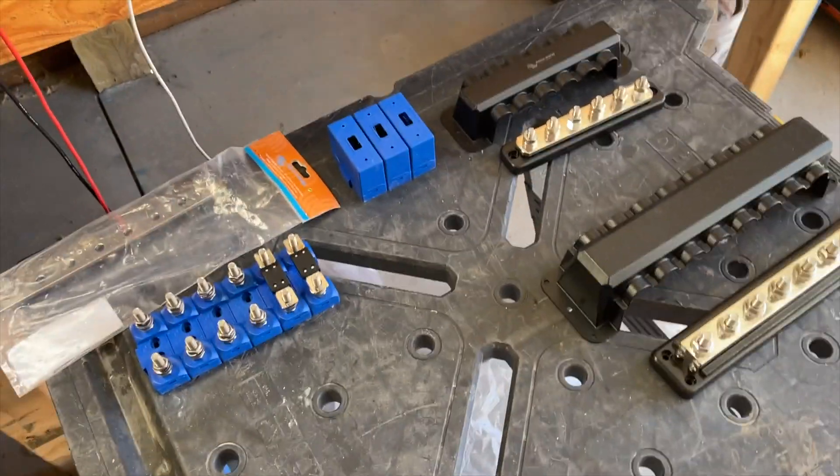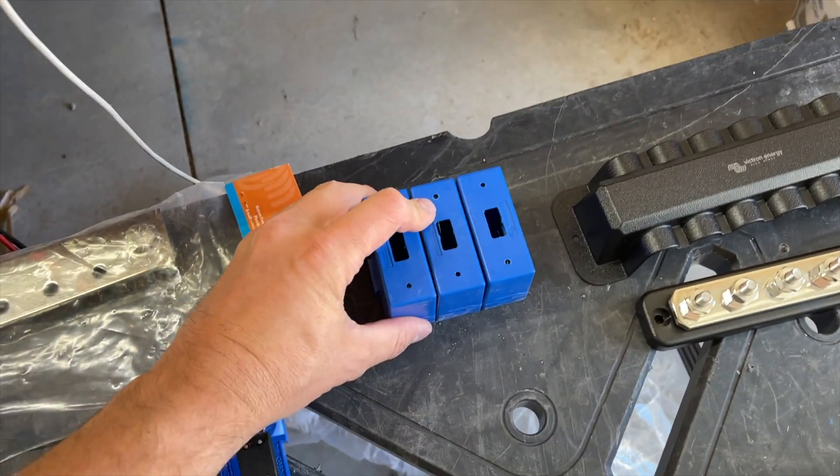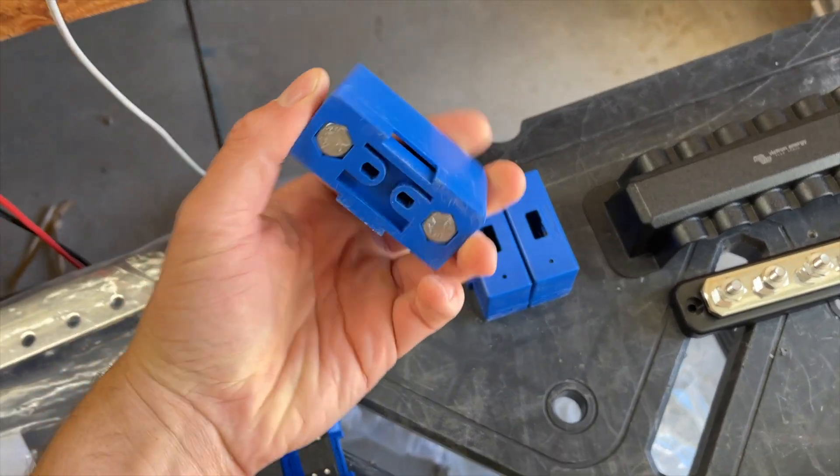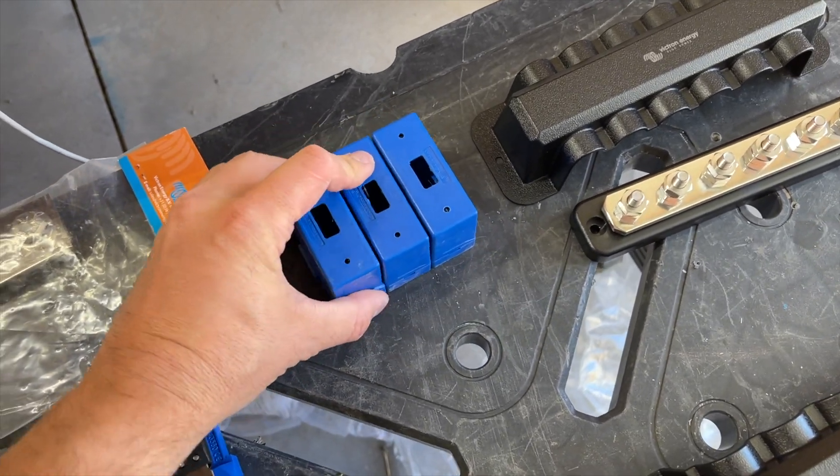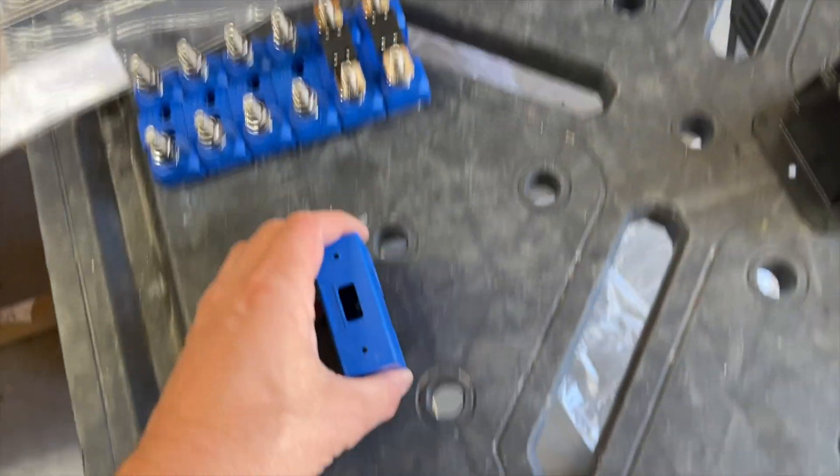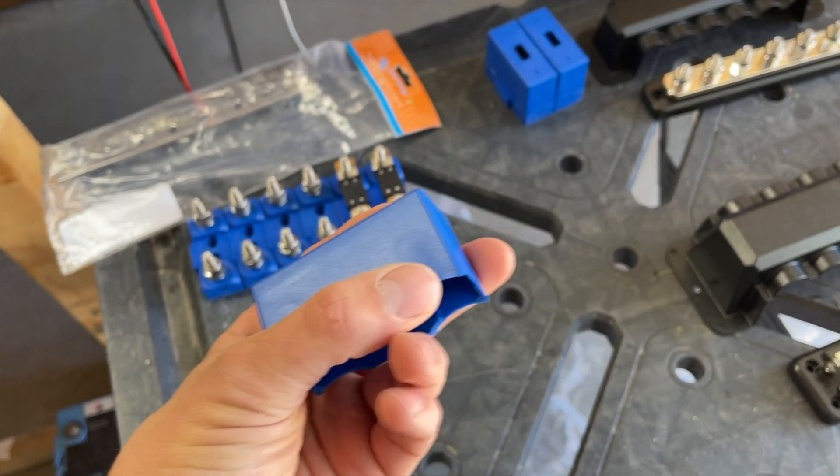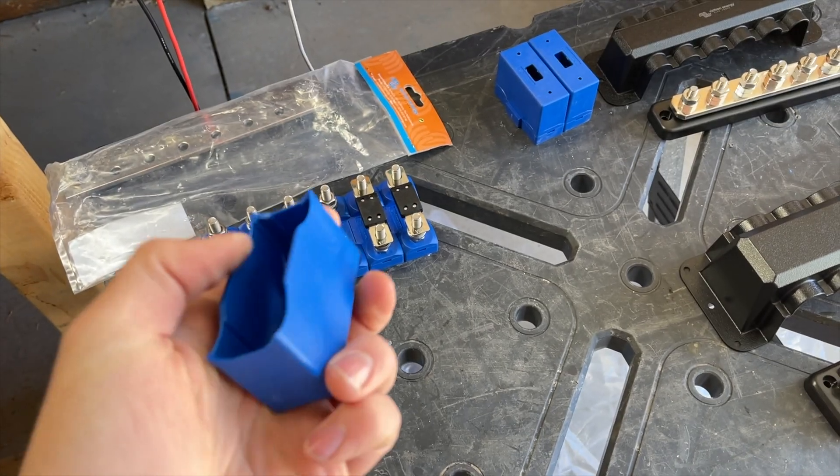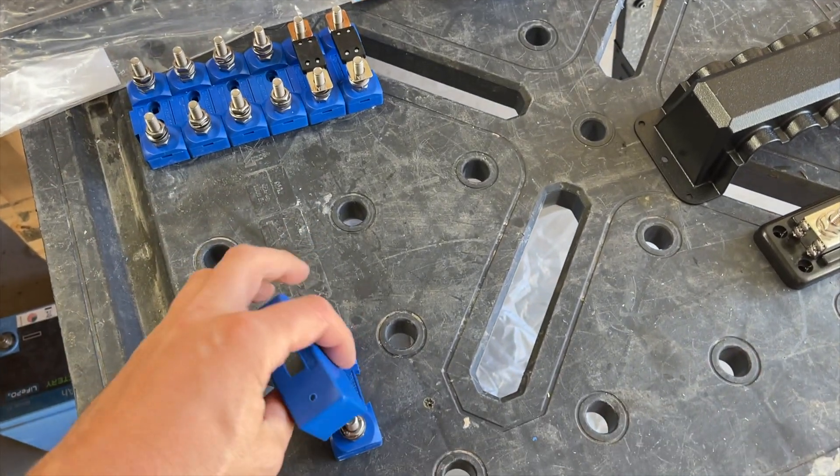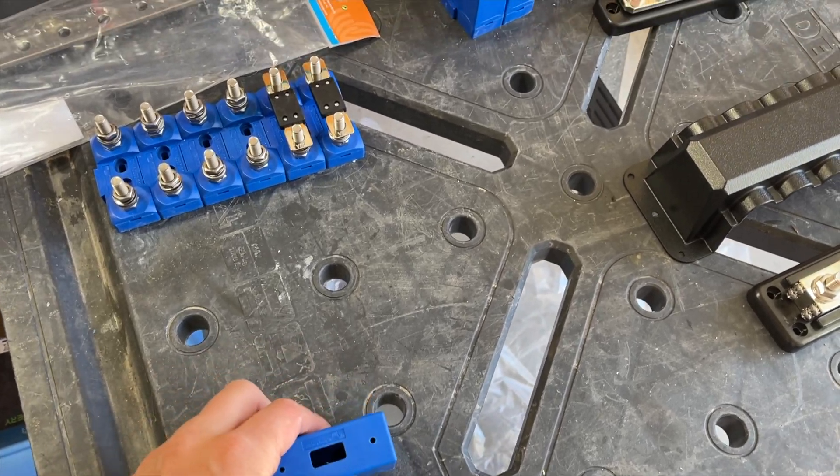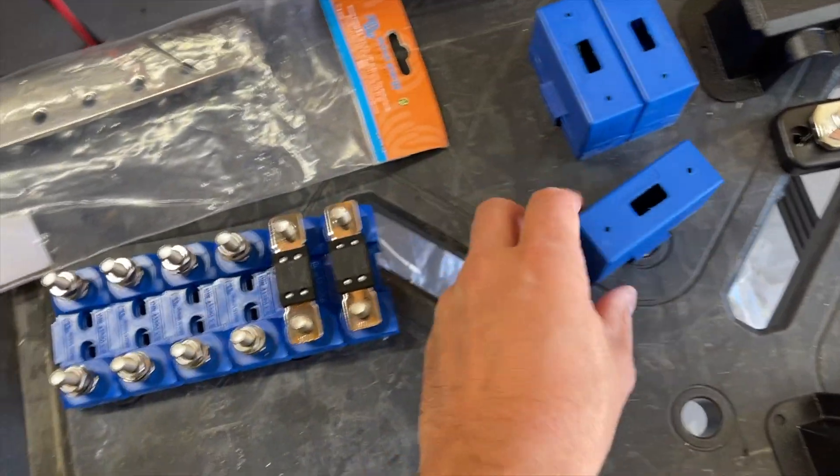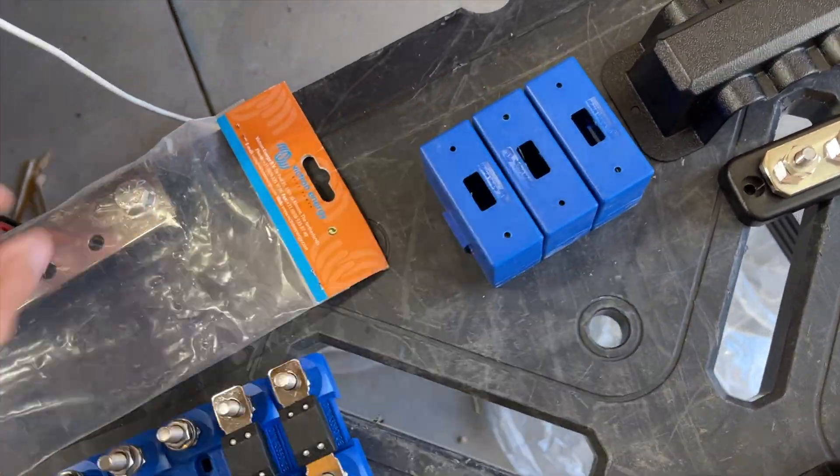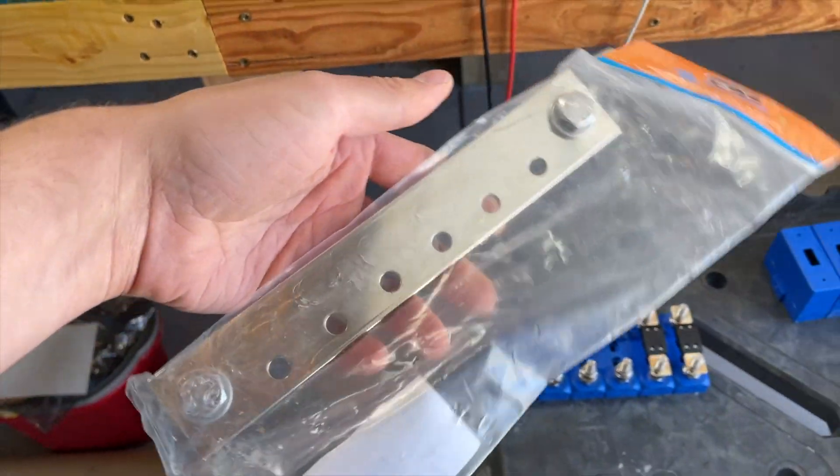Then we've got these modular fuse holders. Now these are pretty cool. These snap together to make one cohesive unit. And they've got this lid where you've got these knockouts where you break out for different things for the wires, if you want to put the cover back on. And you can see the fuse holders go on like that, or the fuses go on like that. But then there's also these bus bars that can go with it.